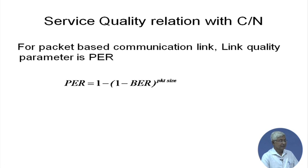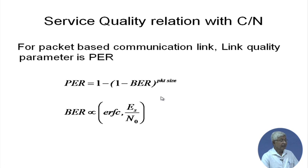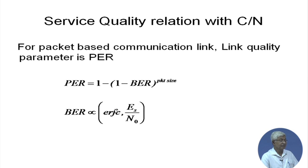When a packet size is defined, in a binary symmetric channel: PER = 1 − (1 − BER)^(packet size). This is the simple relation for packet error rate from BER. BER is based on our modulation and is proportional to the complementary error function of √(Eb/N0) or Es/N0, depending on whether energy per bit or energy per symbol is used.